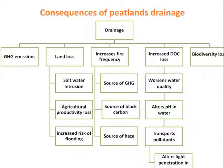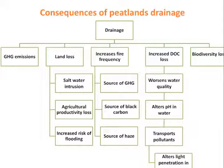There are many other consequences caused by peatlands drainage beyond greenhouse gas emissions. Drainage leads to land loss, increased fire frequency, increased dissolved organic carbon loss, and biodiversity loss. Each causes additional impacts: land loss can lead to saltwater intrusion in coastal areas, agriculture productivity loss, soil erosion, increased risk of flooding, and many other consequences.